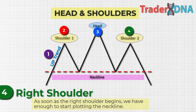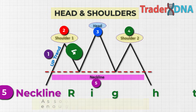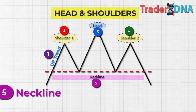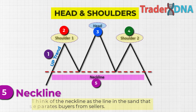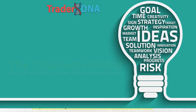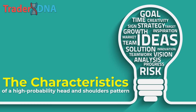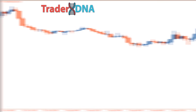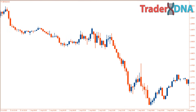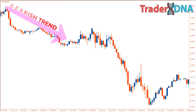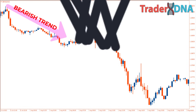Step five — neckline: now that we have a clear head and two shoulders, we can draw the neckline support. This level becomes crucial when we discuss how to trade the breakout — think of the neckline as the line in the sand that separates buyers from sellers. What are the characteristics of a high probability head and shoulders pattern? You can see a clear bearish trend and then a unique head and shoulders pattern forms.